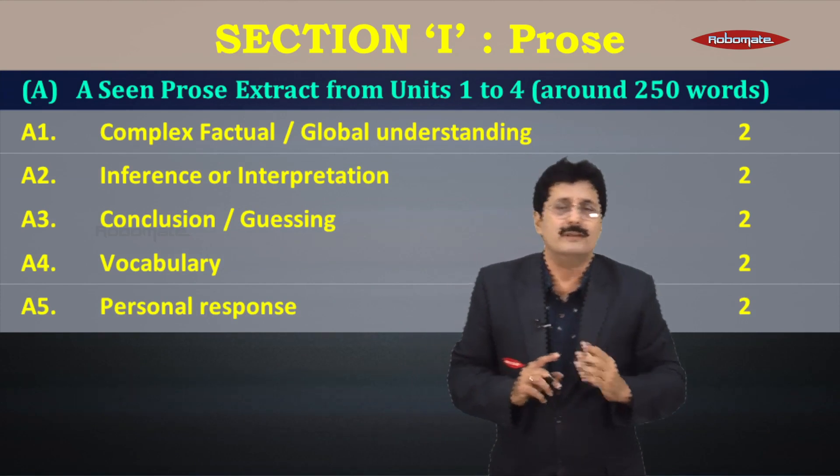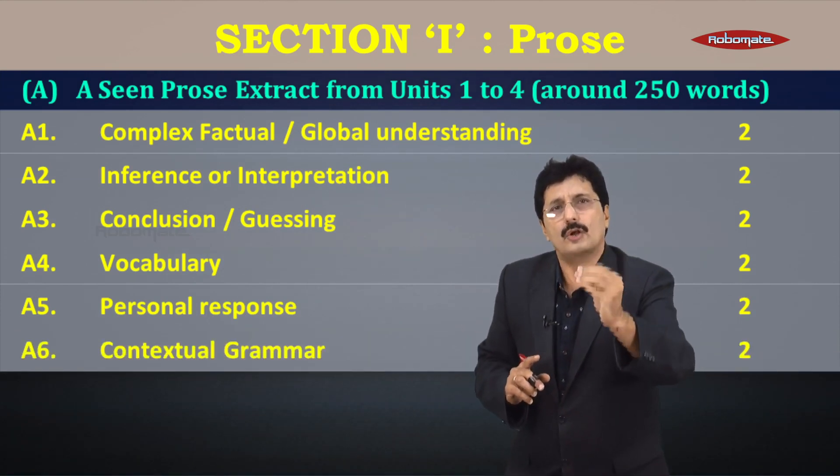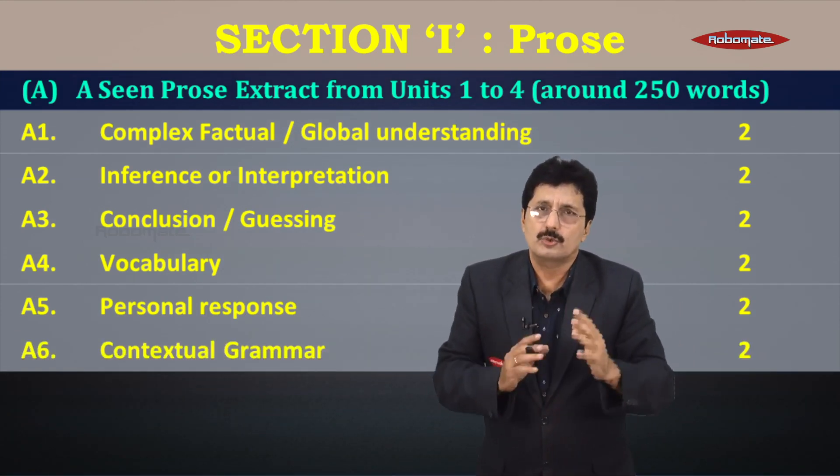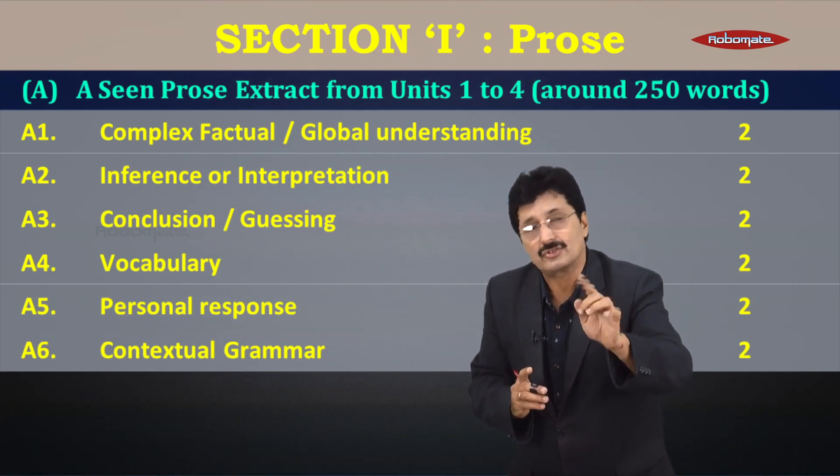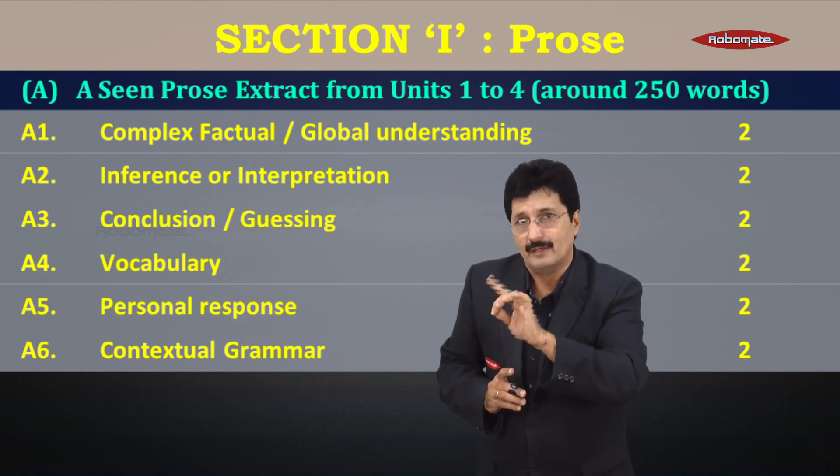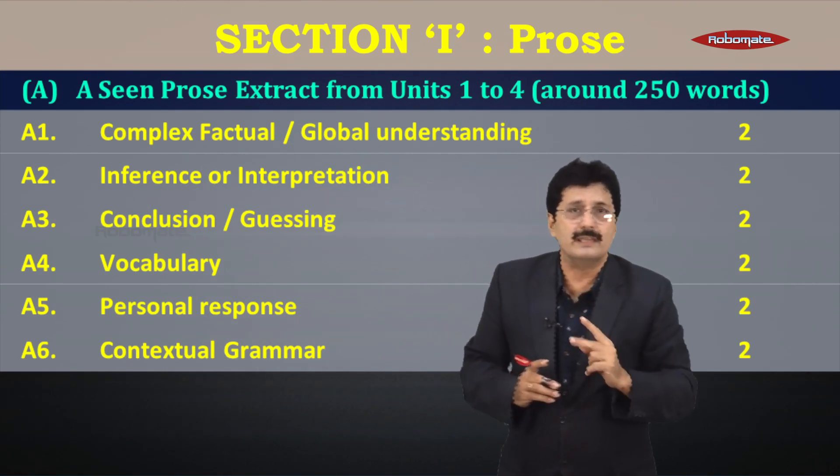Activity number four is vocabulary. Activity number five, again a bit open-ended, the personal response question. And activity number six: contextual grammar. So you have four marks for vocabulary and grammar in each and every passage. That makes it four threes are twelve because there are three passages, two seen and one unseen.